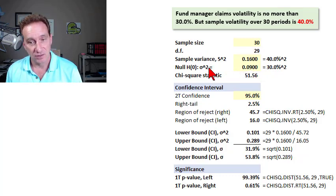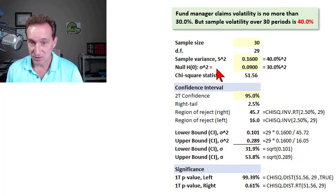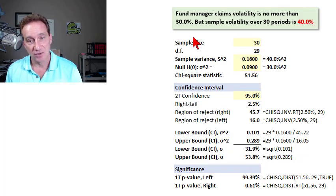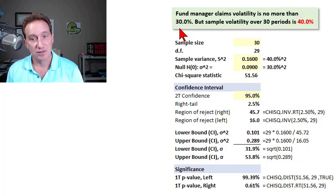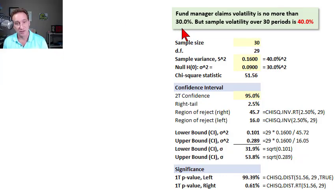It's a one-sided null, not the typical two-sided null. A typical two-sided null would be the null hypothesis that the true population variance is 30% squared. In this case, the null is that the true population variance is equal to or less than 30% squared.